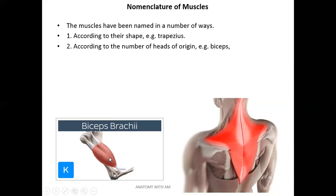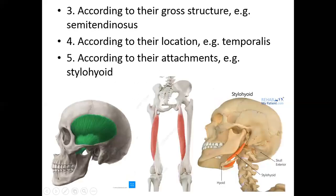A similar muscle is seen in the posterior compartment of the thigh — biceps femoris — which also has two heads. Muscles can also be named by their external appearance. Semitendinosus is an example where half the muscle is tendinous. Deep to it is semimembranosus, named because half of it is membranous. According to location, the muscle on the temporal region is called temporalis. According to attachment, the stylohyoid muscle is attached to the styloid process and then to the hyoid bone.